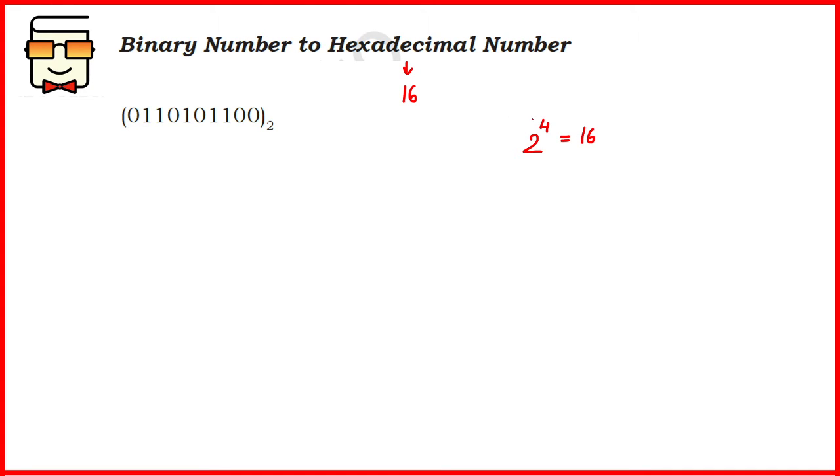That is why instead of creating groups of three digits, we will be creating groups of four digits, and again we will be starting from the extreme right and grouping these digits. Create groups of four till you reach the leftmost group. The leftmost group may have only one, two, three, or even complete four digits. But you need to complete the missing digits and create a group of four by adding zeros in the most significant places.